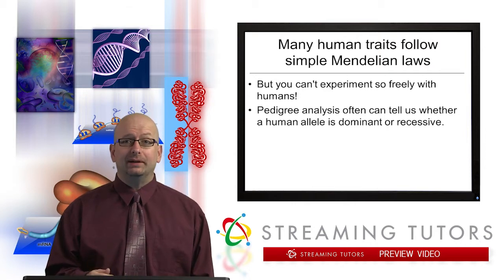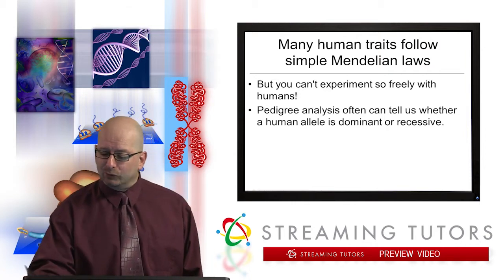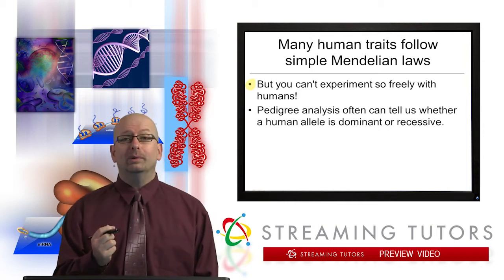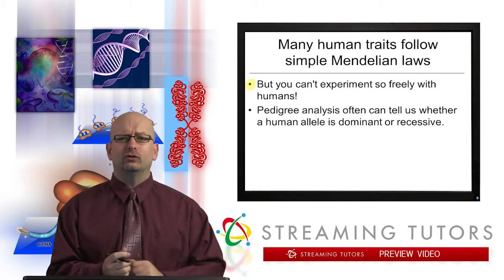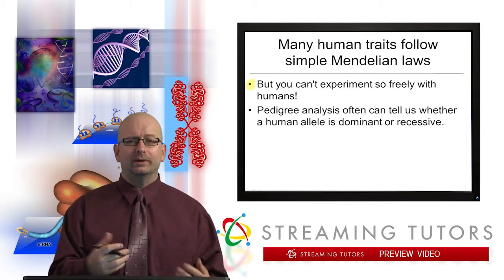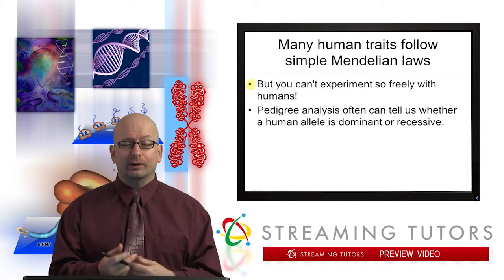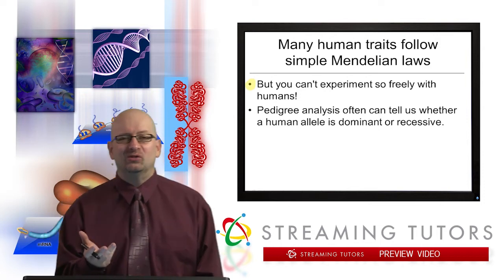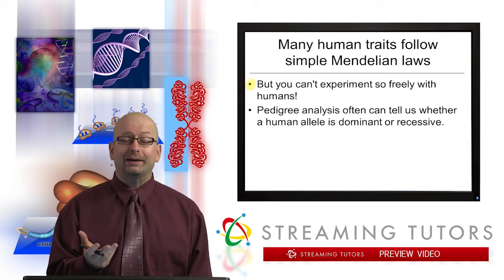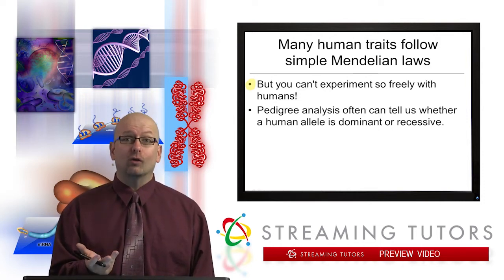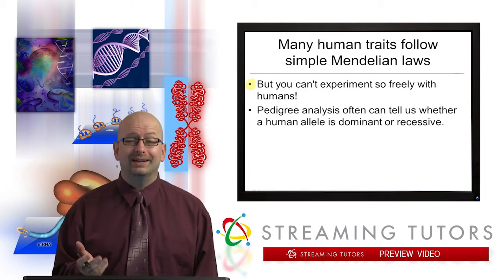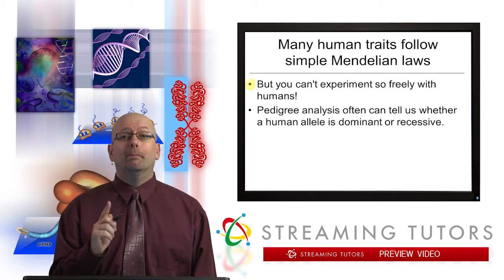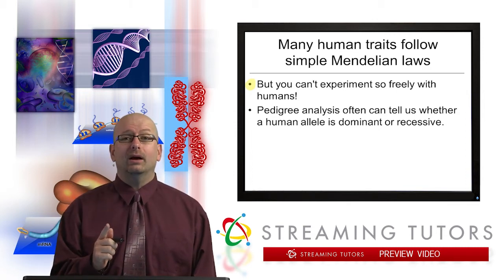Perhaps obviously, you can't really experiment so freely with human beings. We can't say we're going to check this out — you mate with that one and then we'll wait till you have offspring and count them up — aside from the obvious ethical considerations. It just wouldn't be practical because of the long generation time of human beings. Even if people volunteered for the study, it would take forever. But we do have a way around that.